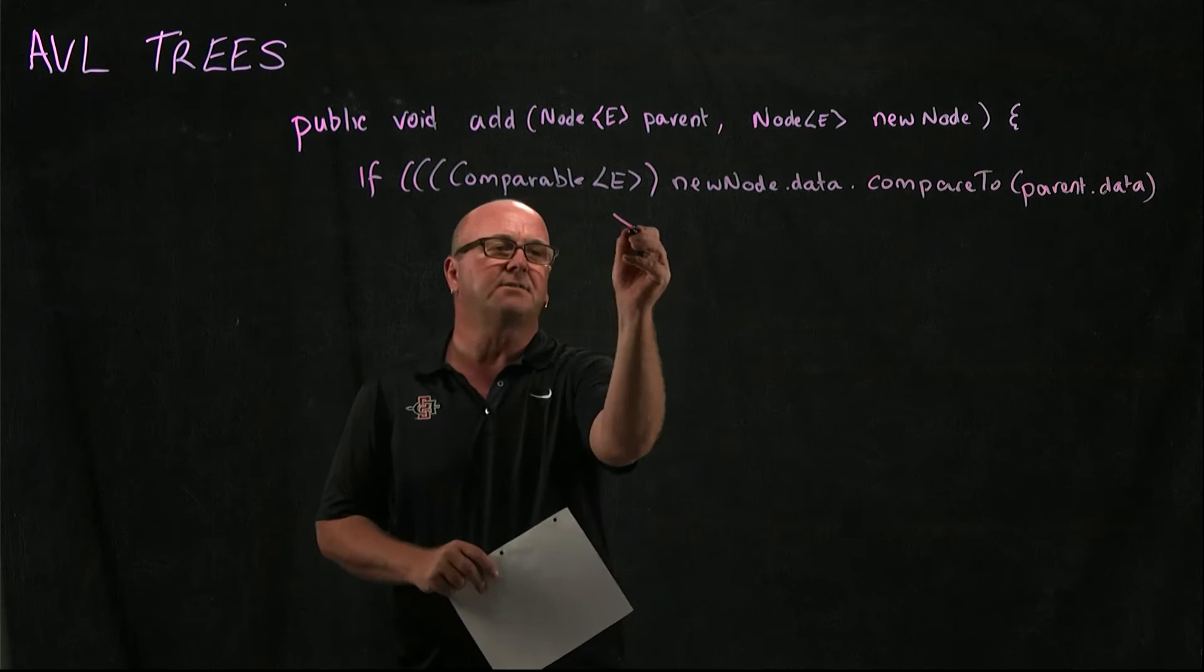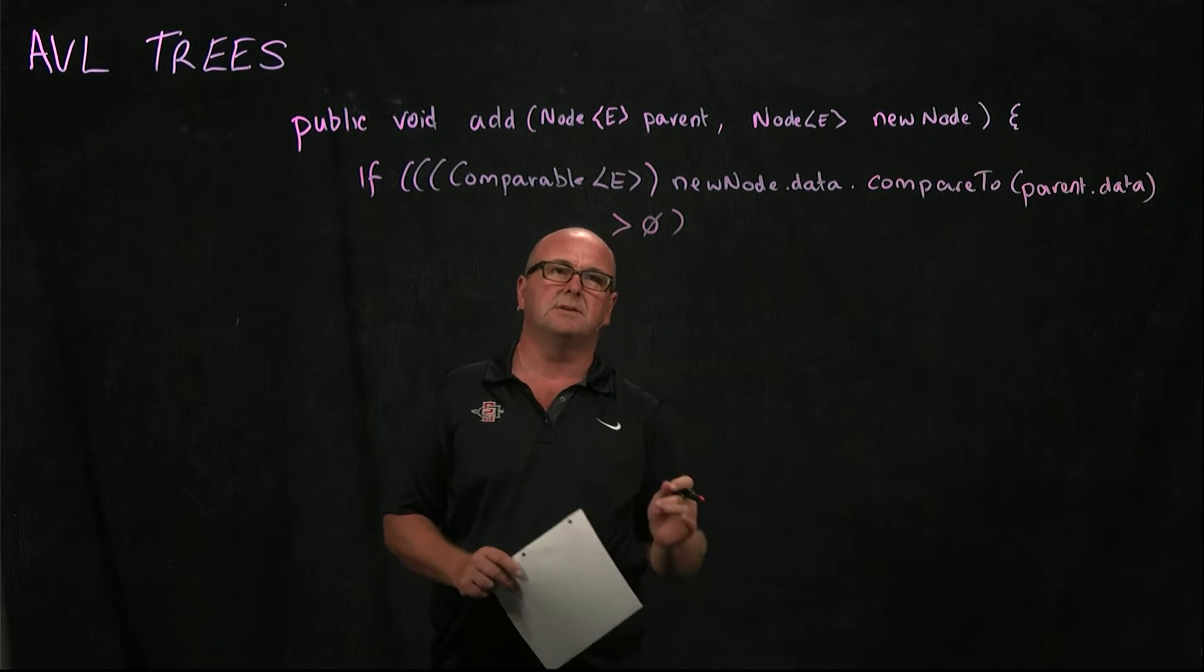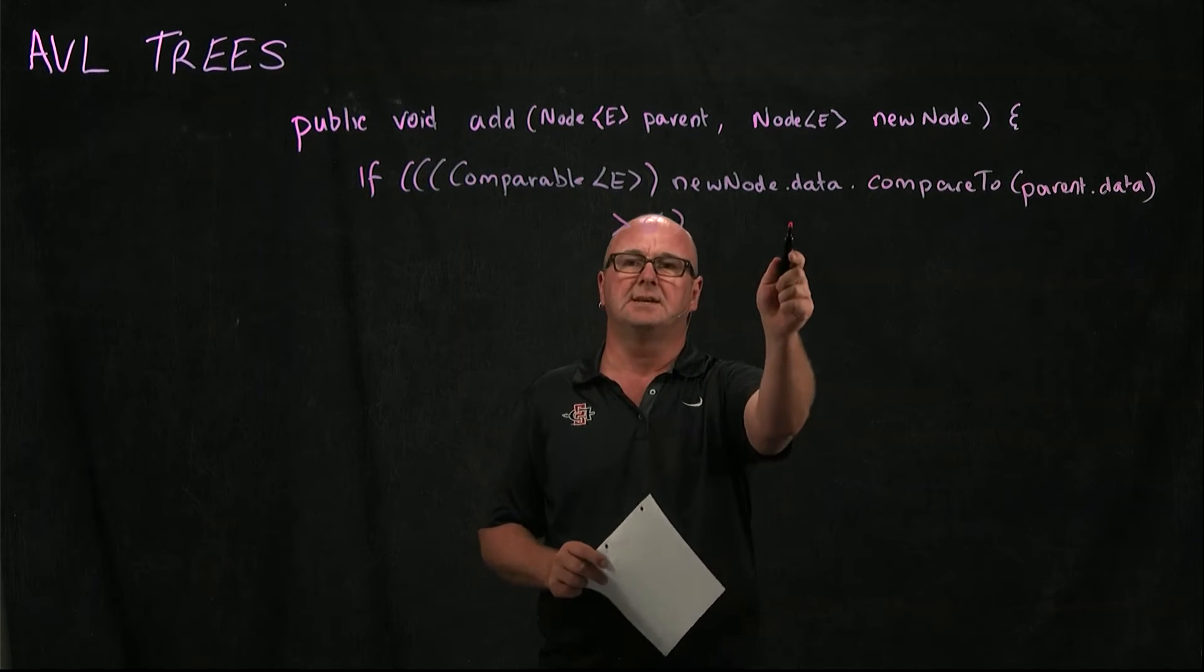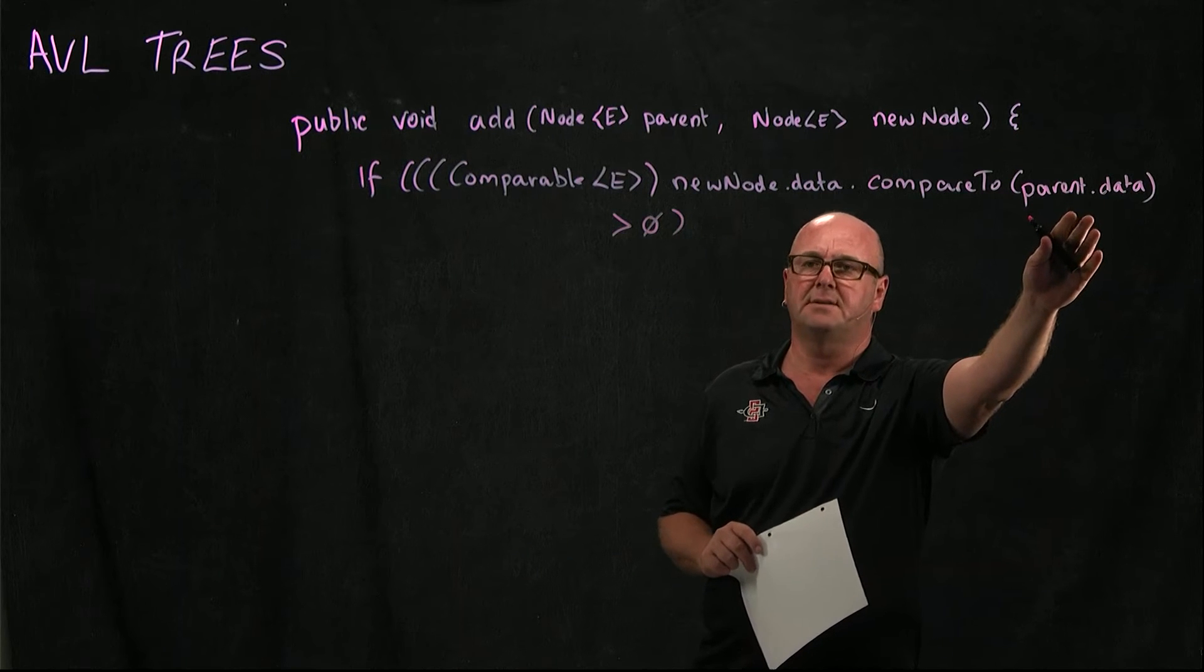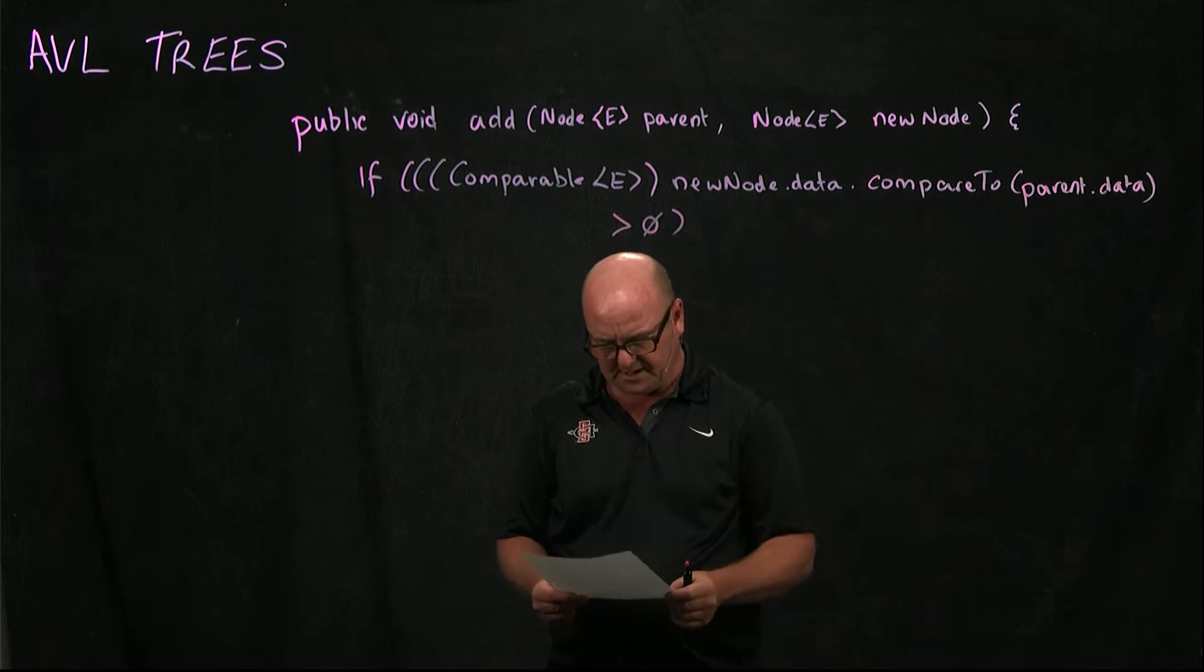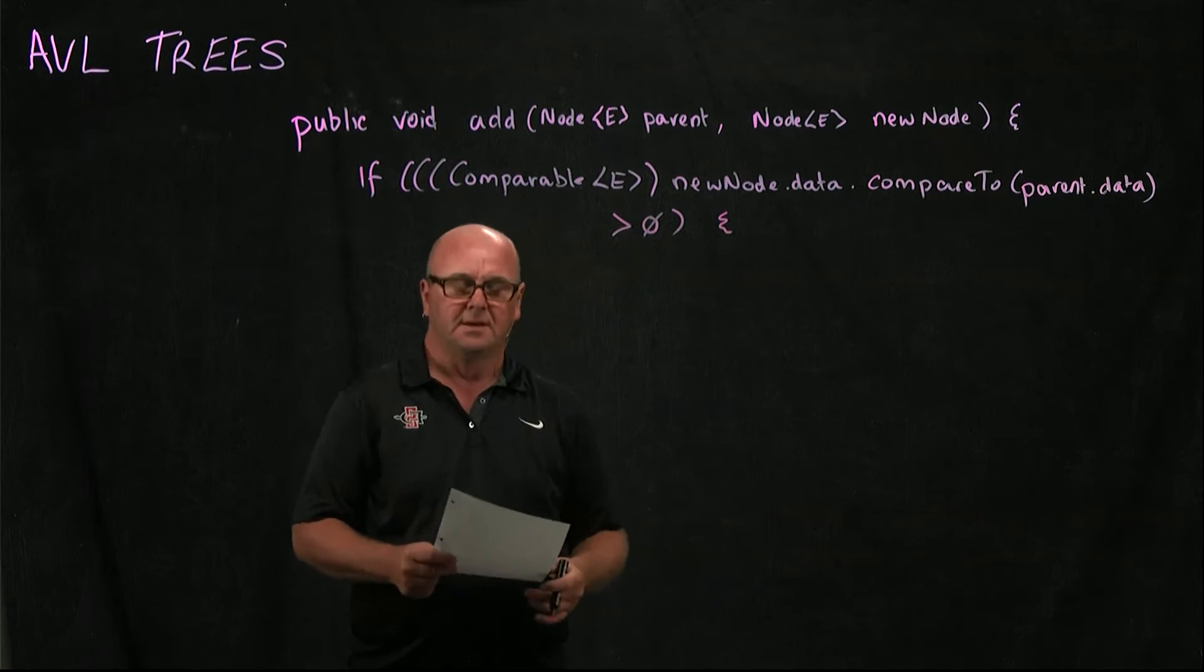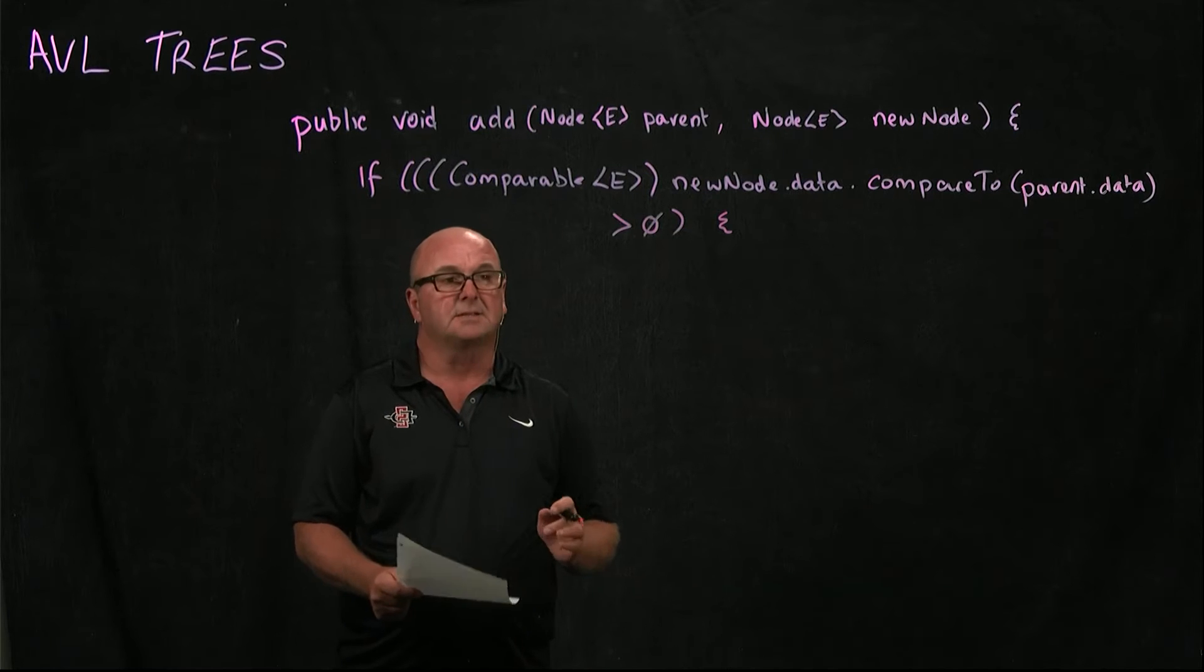And if that is greater than zero, it means that newNode.data is bigger than parent.data. And so we're going to add it to the right-hand side of the tree. So if it's greater than zero, then we add it to the right-hand side.